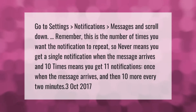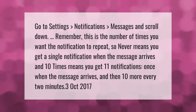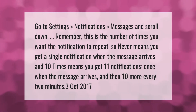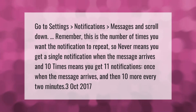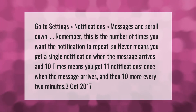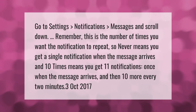Go to Settings, Notifications, Messages, and scroll down. This setting is the number of times you want the notification to repeat — so 'never' means you get a single notification when the message arrives, and '10 times' means you get 11 notifications: once when the message arrives and then 10 more every 2 minutes.